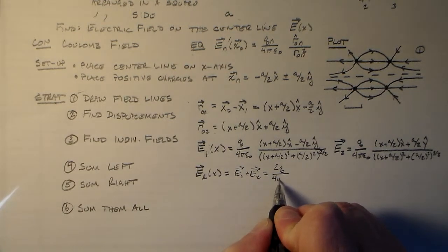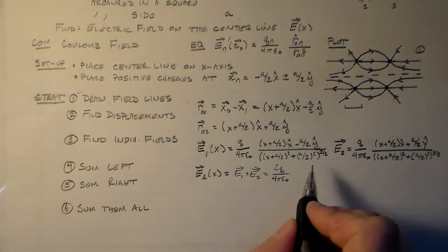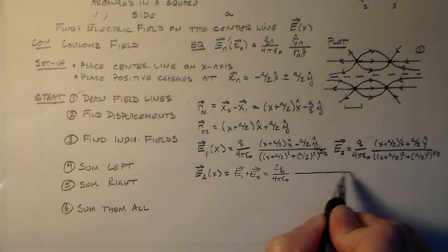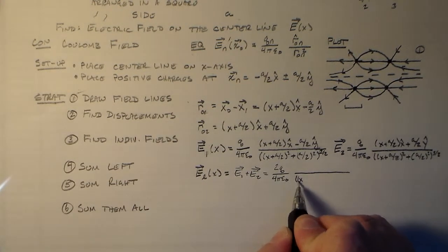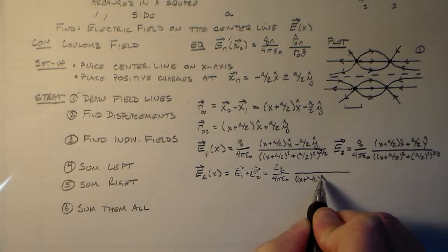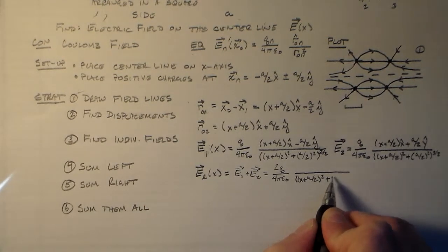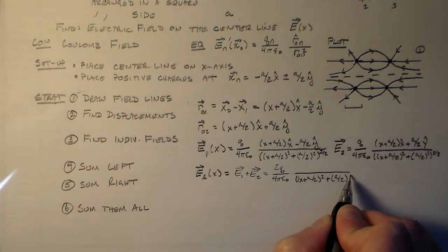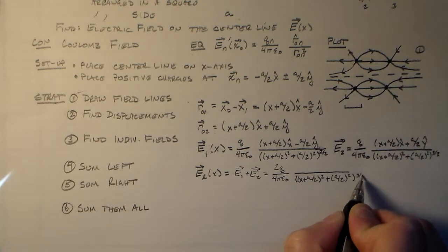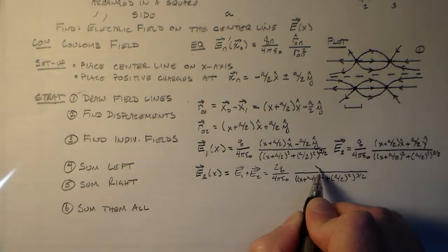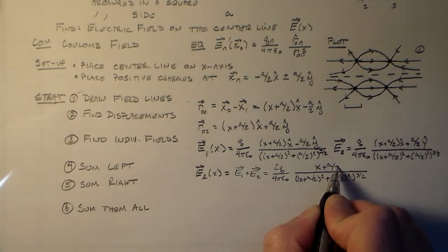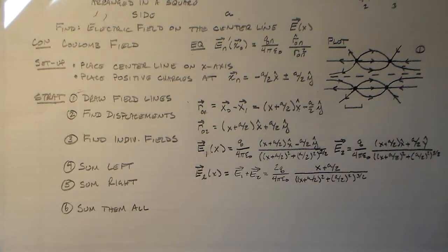So we have 2Q over 4 pi epsilon naught over x plus a over 2 squared plus a over 2 squared to the 3 halves, and x plus a over 2.